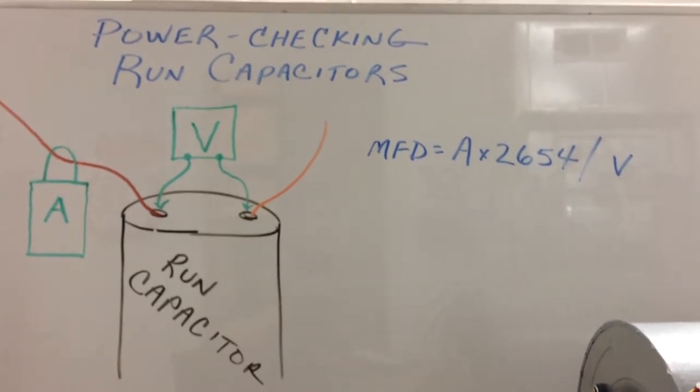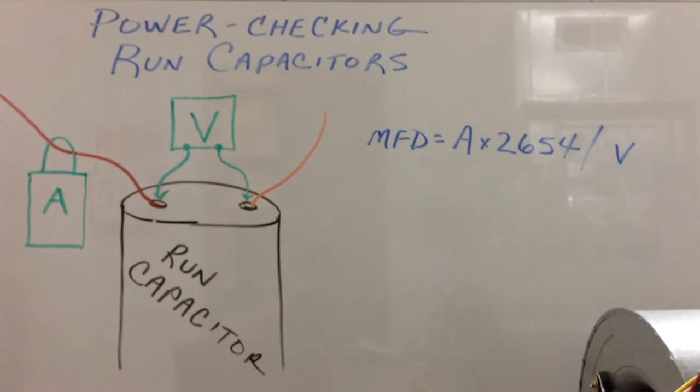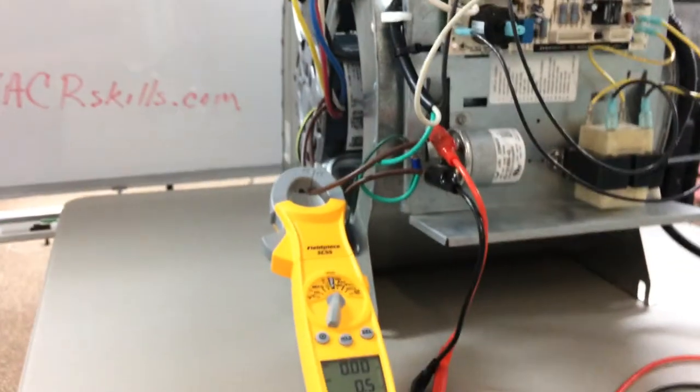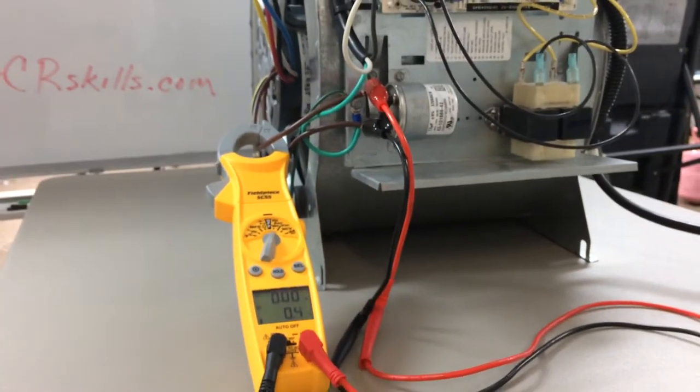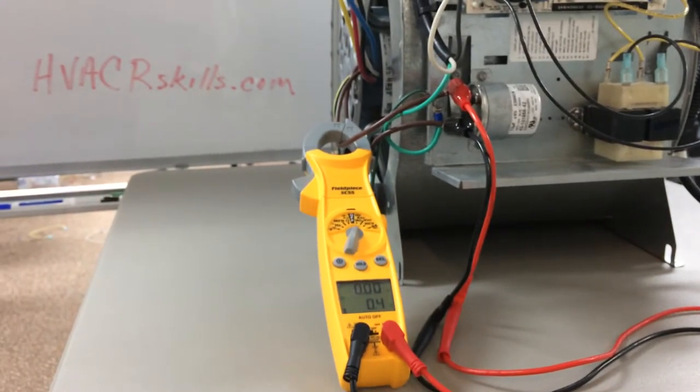The formula that we're going to use for this is microfarads equals amps times 2654 divided by volts. Amps times 2654 divided by volts. So that's our game plan to plug these numbers we just measured into the formula.